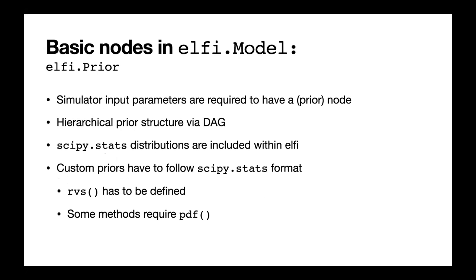In addition to the simulator, you have the prior nodes. All simulator input parameters are required to have a prior node. The DAG enables quite convenient hierarchical prior structures. Prior nodes need to have at least two methods — the capability of generating random variables via the RVS method. Some methods require the PDF of the distribution, such as BOLFI. At minimum, you need the RVS sampling method, and it has to be in SciPy stats format.